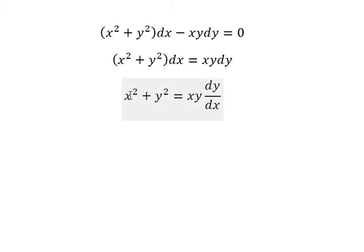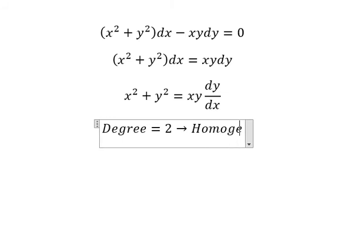Next, we have x², y², x, y. They are degree 2, so this is homogeneous.